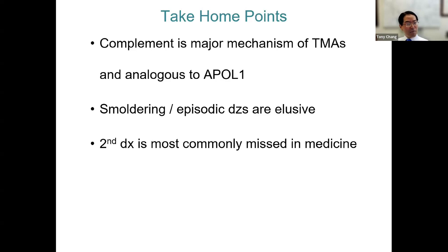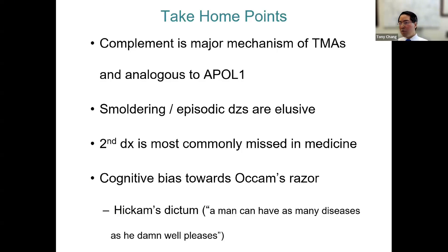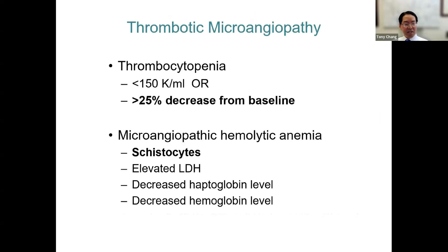The most commonly missed diagnosis in medicine is the second one — just like the most commonly missed fracture in the ER is the second one. Atypical HUS often is the second diagnosis. This really reveals our cognitive bias towards Occam's razor, towards parsimony of diagnoses. In this case, Hickam's dictum is absolutely at play — a patient can have as many diseases as they damn well please. We'll show you the biological rationale of why this is the case, especially with complement.